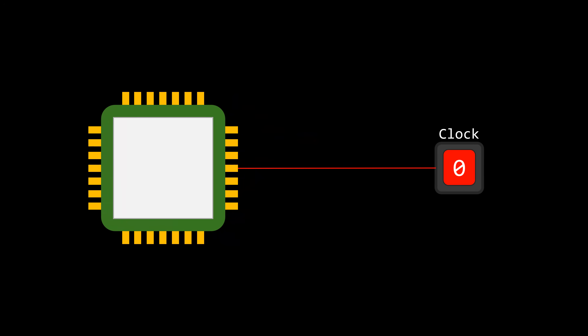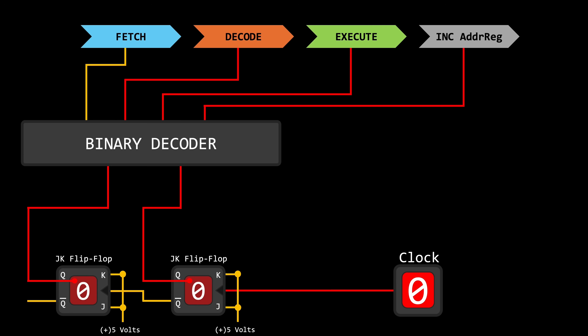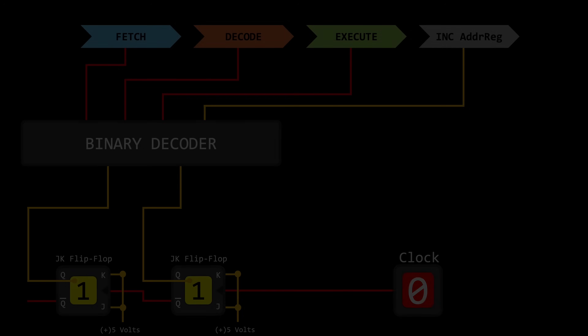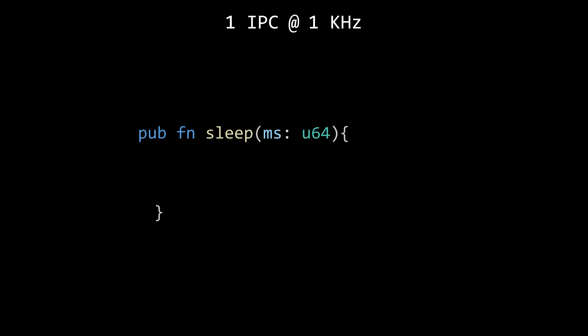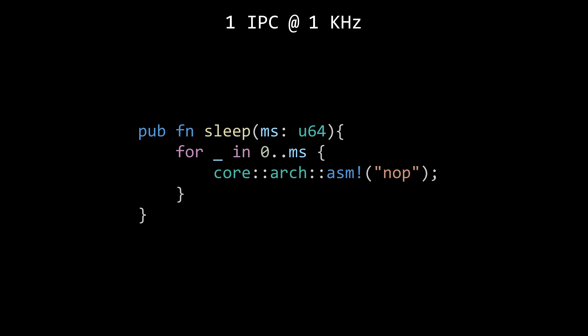We're going to use one of the most basic principles in computing: the CPU needs a clock to run code. This clock acts like a heartbeat, telling the CPU when to move to the next step in the code it's executing. Let's say the processor executes one instruction per clock cycle and the clock is running at 1 kHz — so running 1,000 instructions would take exactly one second. If we wanted to create a delay in our code, like a custom sleep function, the simplest method would be to use a loop that does absolutely nothing — it just burns clock cycles until the loop exits, and by then the desired time has passed.